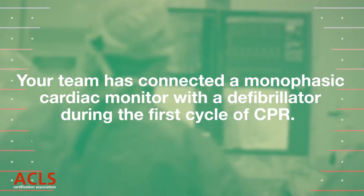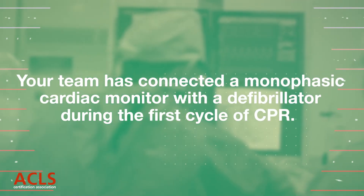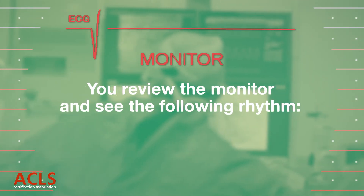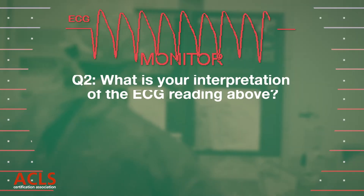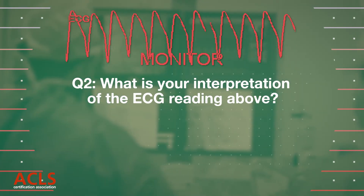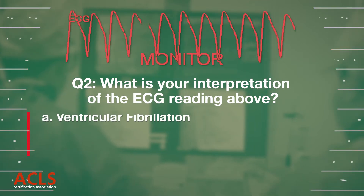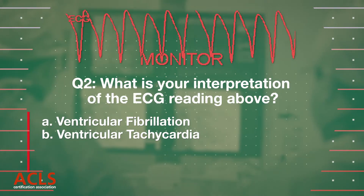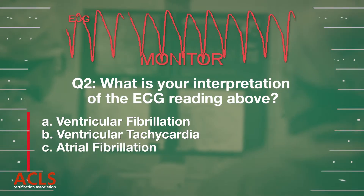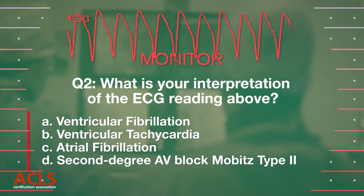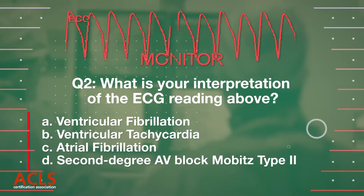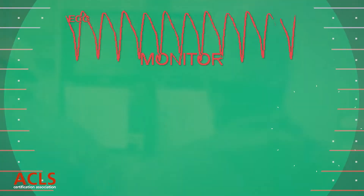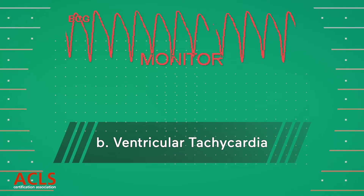Your team has connected a cardiac monitor with a defibrillator during the first cycle of CPR. You review the monitor and see the following rhythm. Question 2: What is your interpretation of the ECG reading? A. Ventricular fibrillation. B. Ventricular tachycardia. C. Atrial fibrillation. D. Second degree AV block Mobitz type 2. Correct answer: B. Ventricular tachycardia.